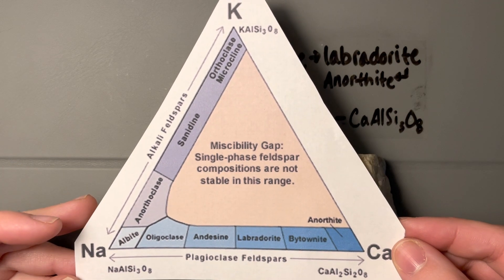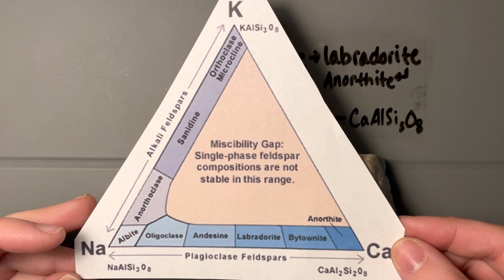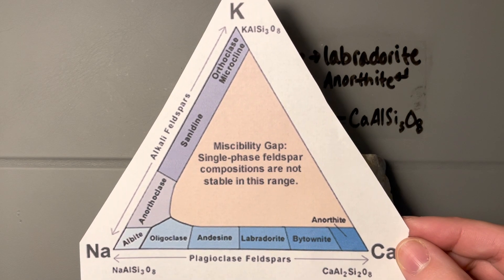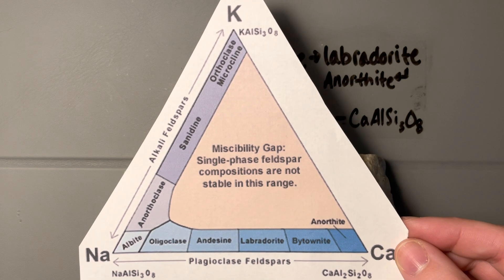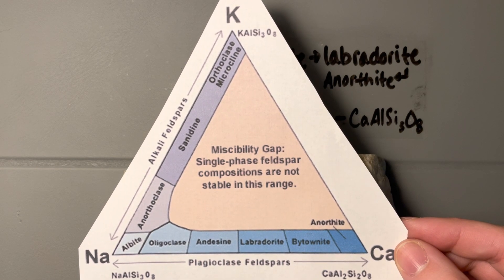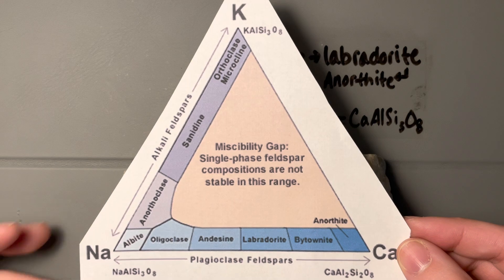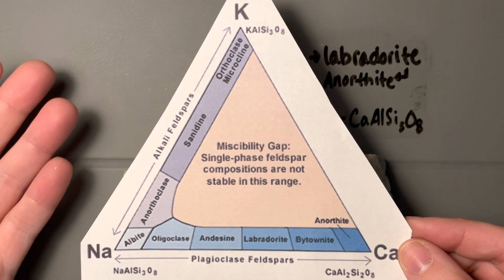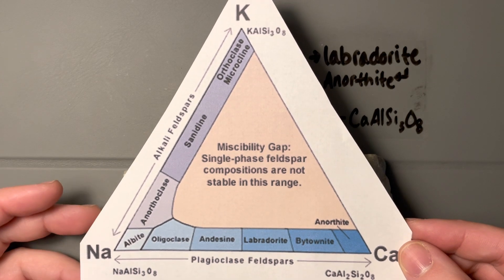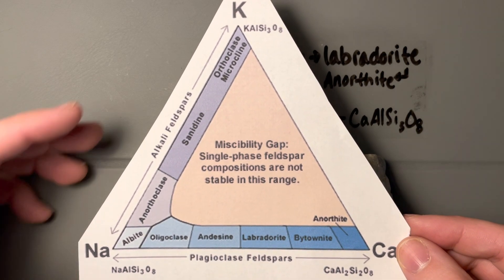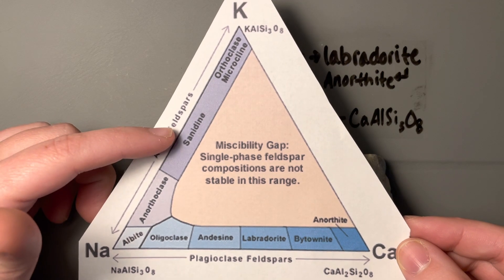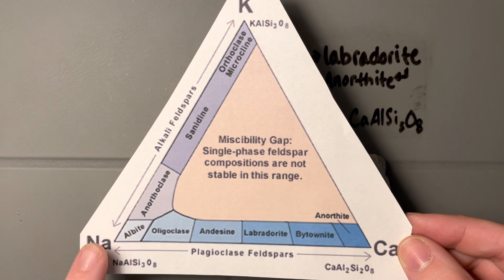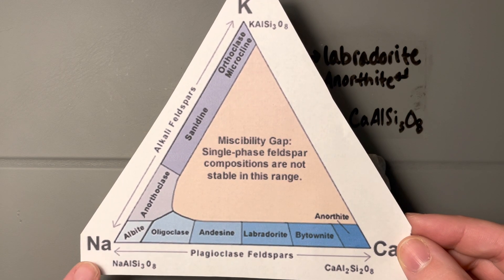Sanidine is a very important mineral to understand for petrology, but it usually forms in igneous rocks and is very fine-grained. In rhyolites and similar rocks it's very common, however the crystals are so small that we can't have a nice hand sample to show as an example for a mineral quiz or exam. You'll see a lot of this when you take petrology in the next couple of semesters.